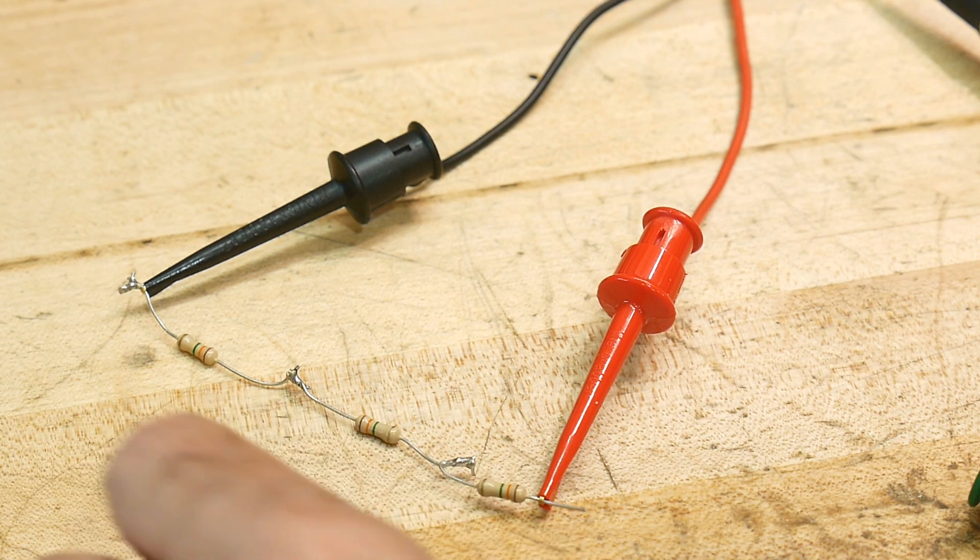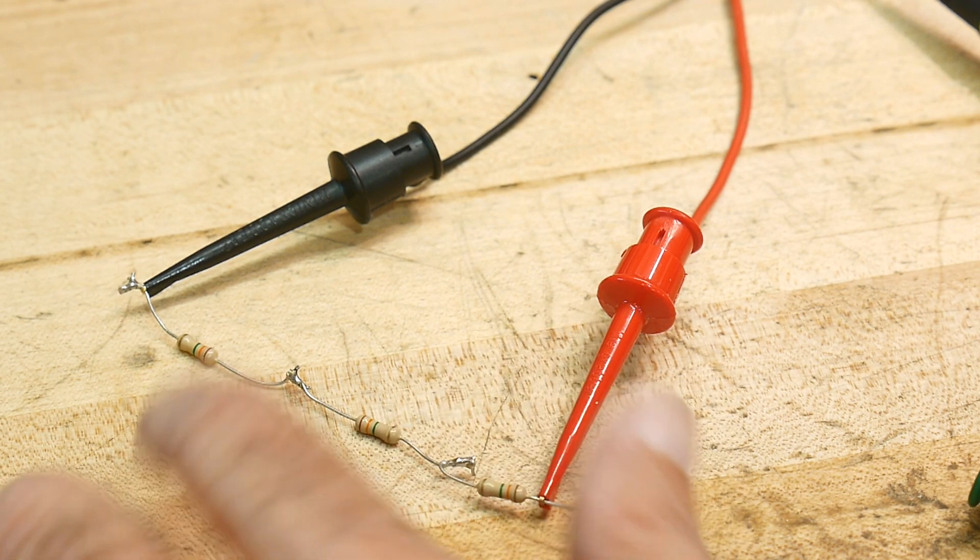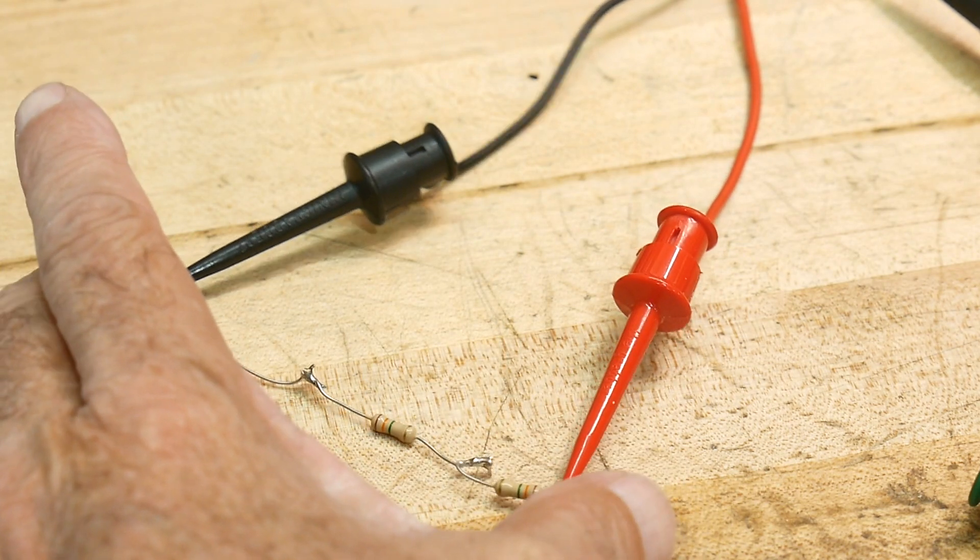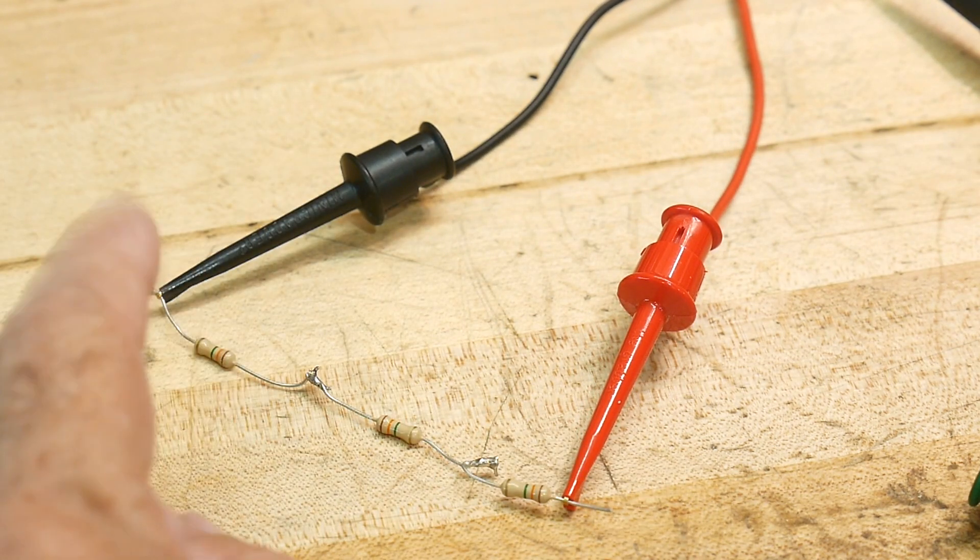I'm going to do the same demonstration here on scope probes, so scope probes also load down circuits. I'm going to be using the same resistors that I used on that other video I did. I'll try to put a link below if I remember.